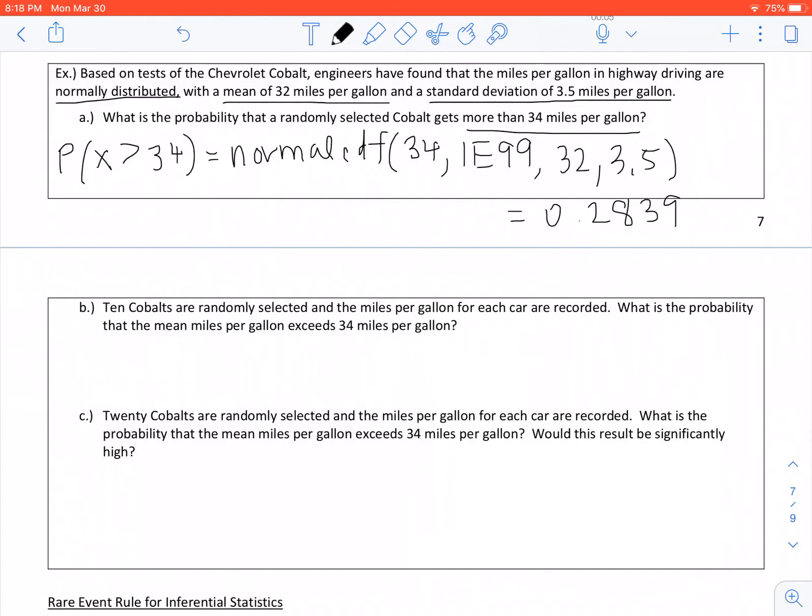Part B looks almost identical to part A. It says ten Cobalts are randomly selected, and what is the probability that the mean miles per gallon exceeds 34 miles per gallon? It looks almost identical, except this time it's asking for the mean miles per gallon. It did not say that in A—if you look at A, it says just more than 34. And since we're sampling this as our mean, we are going to be dealing with finding the probability that the mean miles per gallon, which we show by saying x-bar is greater than 34.